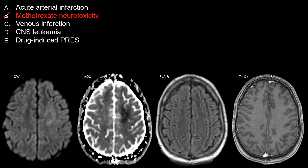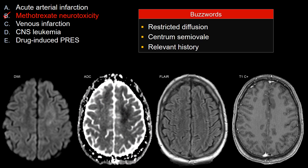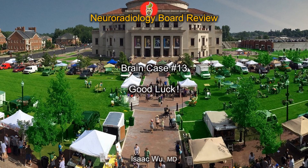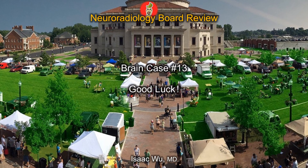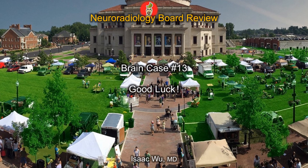Overall, this is best explained by mesotrexate neurotoxicity, particularly intrathecal mesotrexate administration. The buzzword on the board exam is restricted diffusion involving the centricernal valley. History is important — the patient has ALL leukemia and is undergoing chemotherapy. Next time you see this finding with relevant history, think mesotrexate neurotoxicity. That's all for brain case number 13. Thank you for your attention and good luck on your board exam.